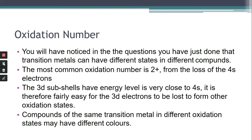We already know that the 3d subshells have got an energy level very, very close to that of the 4s — that's why 4s fills before 3d. But we also have to remember 4s are further out, so they're lost first because there's more shielding, which makes it more difficult for the nucleus to attract those outermost 4s electrons. But because 3d is relatively close to 4s, it's also possible for 3d electrons to be lost, and this is why we get other oxidation states. Another interesting thing about transition metals is that the different oxidation states lead to different colours.